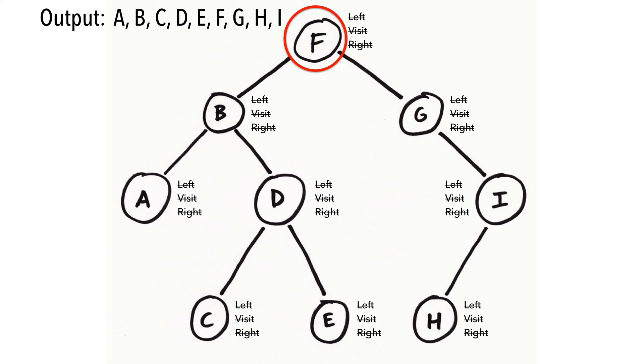And that's it. We're back at F. We've seen its left subtree, printed its value, and traverse its right subtree.